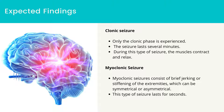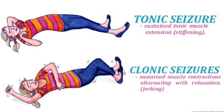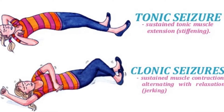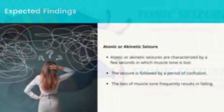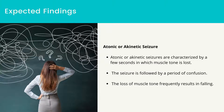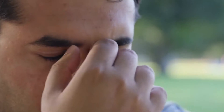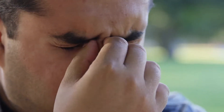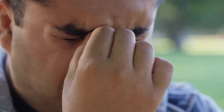Clonic seizure: only the clonic phase is experienced. The seizure lasts several minutes; during this type of seizure, the muscles contract and relax. Myoclonic seizure: myoclonic seizures consist of brief jerking or stiffening of the extremities, which can be symmetrical or asymmetrical; this type of seizure lasts for seconds. Atonic or akinetic seizure: characterized by a few seconds in which muscle tone is lost, followed by a period of confusion. The loss of muscle tone frequently results in falling.